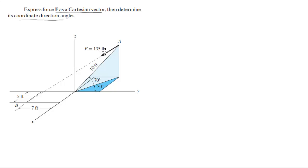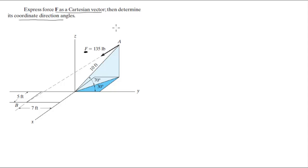Then you just multiply the cosine of those direction angles by the magnitude, and that will give you all the values we want — the Cartesian vector form. So don't worry, I'm going to do everything. This is just an overview of what I'm going to do.